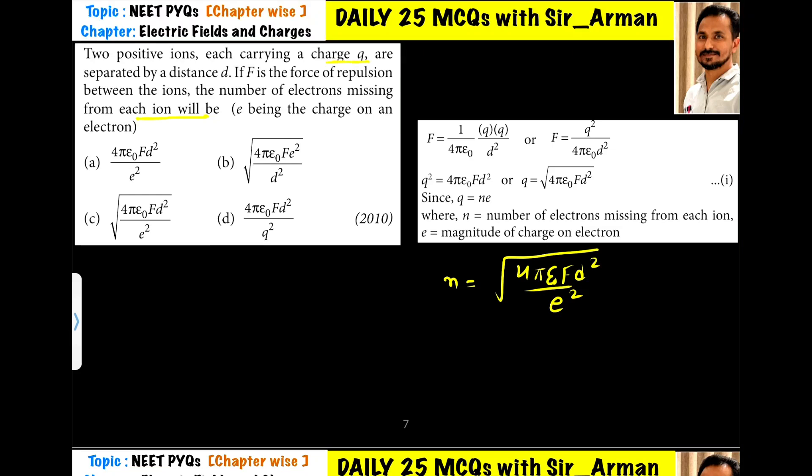Two positive ions each carrying a charge q are separated by distance d. The repulsive force between them is given by k q squared by d squared, where k is 1 upon 4 pi epsilon 0 q squared by d squared.